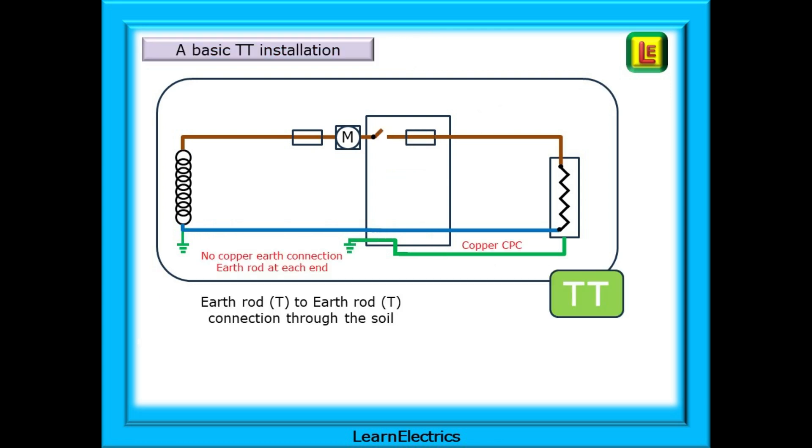And this is a basic TT system. T for terra or earth. TT stands for terra terra or earth rod T to earth rod T, with the electrical connection between the two being made through the soil. There is no copper connection between the earth at the supply transformer and the earth at the property and this has a big impact on our test results.